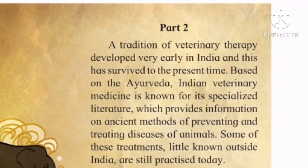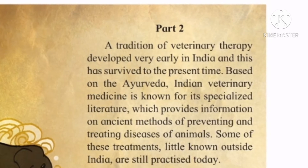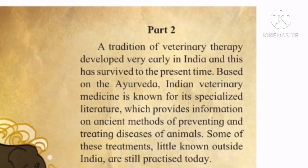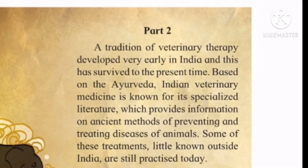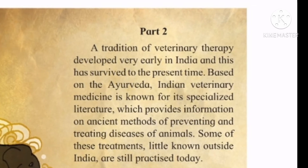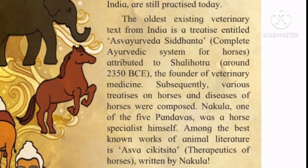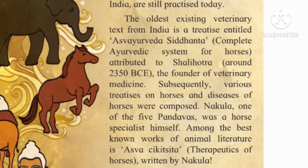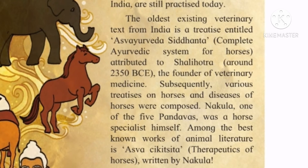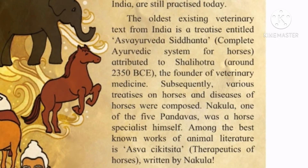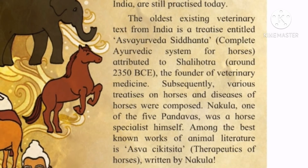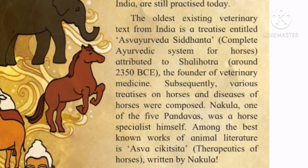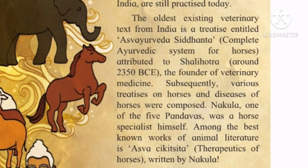Part 2: A tradition of veterinary therapy developed very early in India and has survived to the present time. Based on Ayurveda, Indian veterinary medicine is known for its specialized literature which provides information on ancient methods of preventing and treating diseases of animals. Some of these treatments outside India are still practiced today. The oldest existing veterinary text from India is a treatise entitled Asvayurveda Siddhanta, a complete Ayurvedic system for horses, attributed to Shalihotra around 2350 BCE — the founder of veterinary medicine. Nakula, one of the five Pandavas, was a horse specialist himself.